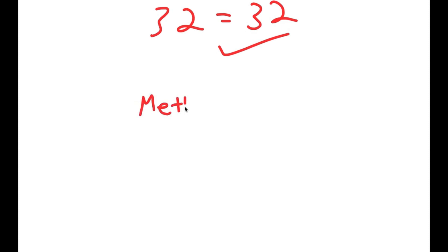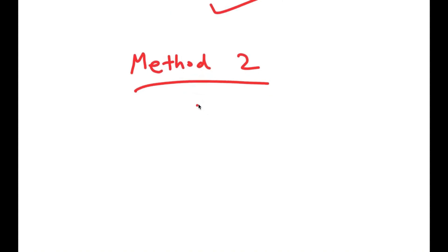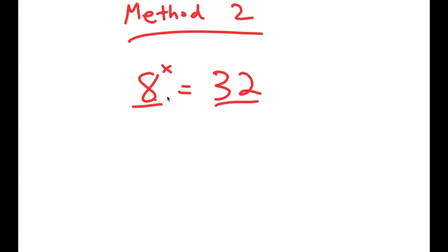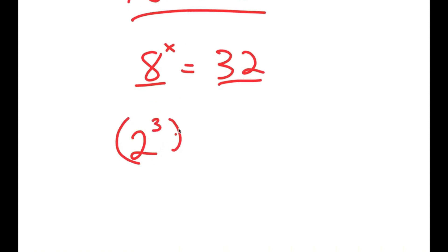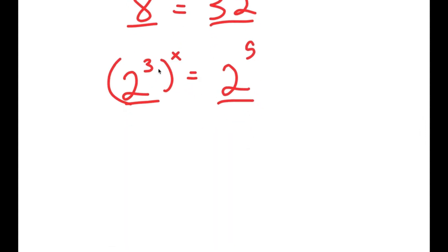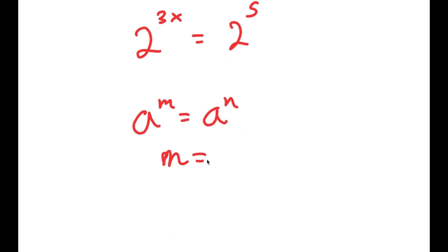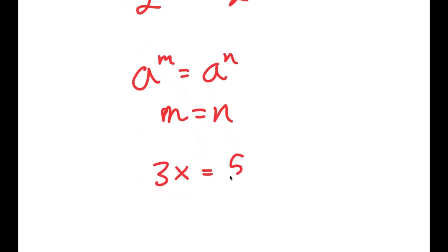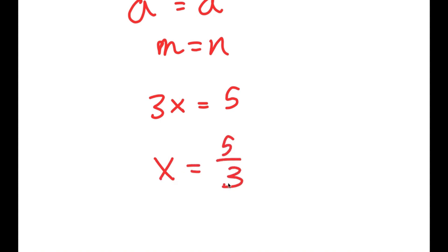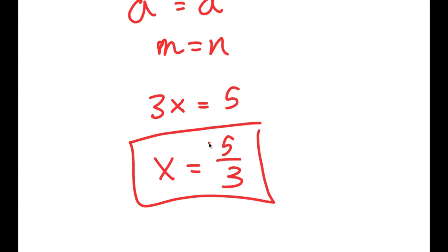I also have a second method of solving this problem. We have the same equation, 8 to the power of x is equal to 32, and this is a simpler method. I'm going to rewrite 8 as 2 to the power of 3 and 32 as 2 to the power of 5, rewriting both as the same base. So 2 to the power of 3 to the power of x is the same as 2 to the power of 3x, which equals 2 to the power of 5. Because these two have the same bases, if a to the power of m equals a to the power of n, then m equals n. So 3x equals 5 and x equals 5 over 3.